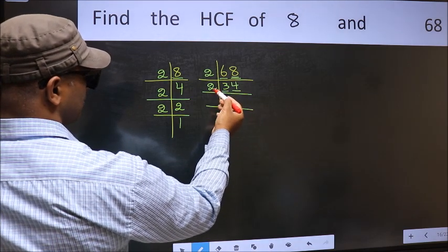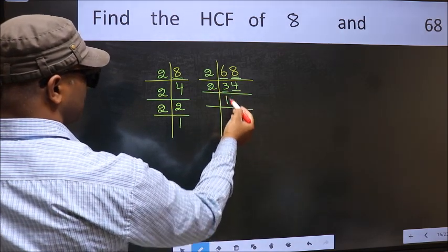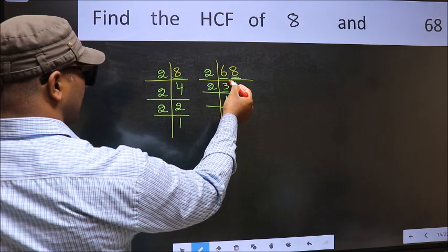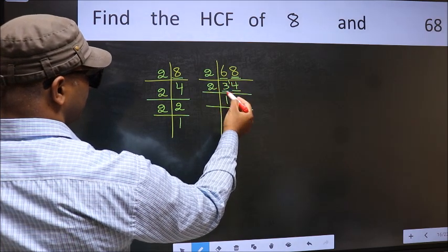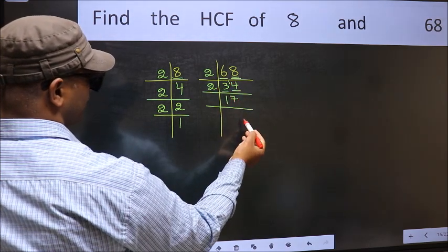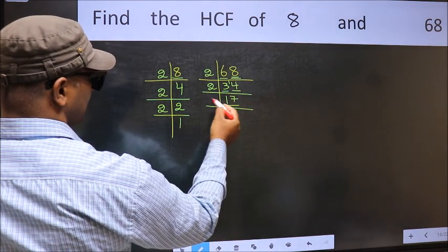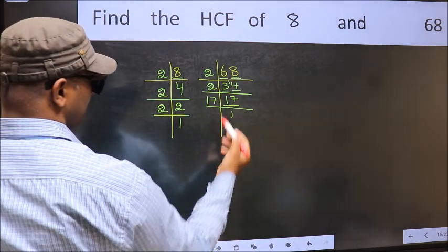First number 3. A number close to 3 in 2 table is 2 times 1 is 2. 3 minus 2 is 1, carried forward 14. When do we get 14 in 2 table? 2 times 7 is 14. Now 17 is a prime number so 17 times 1 is 17.